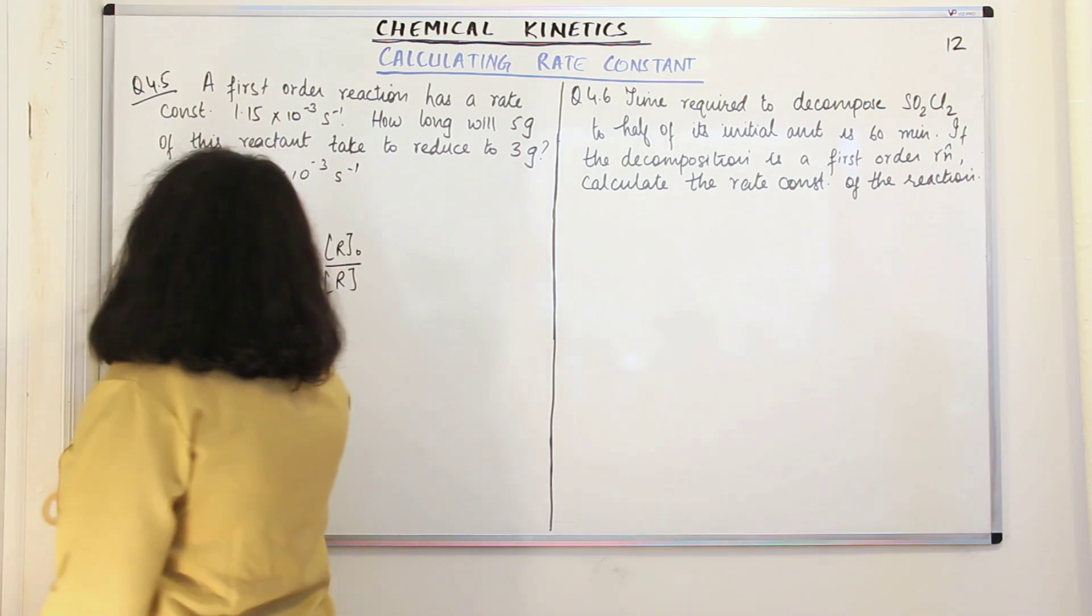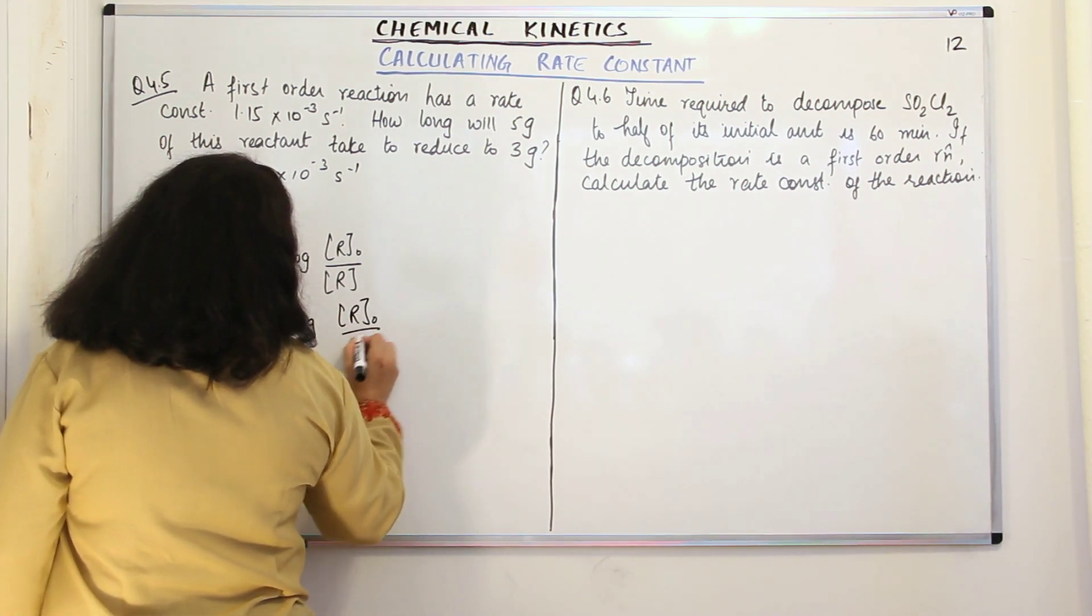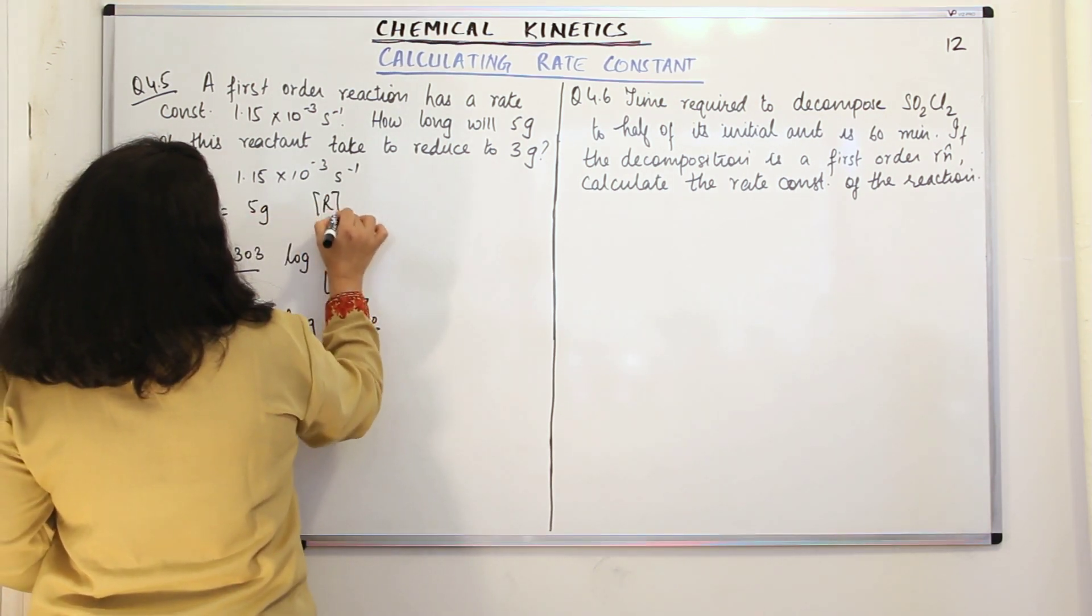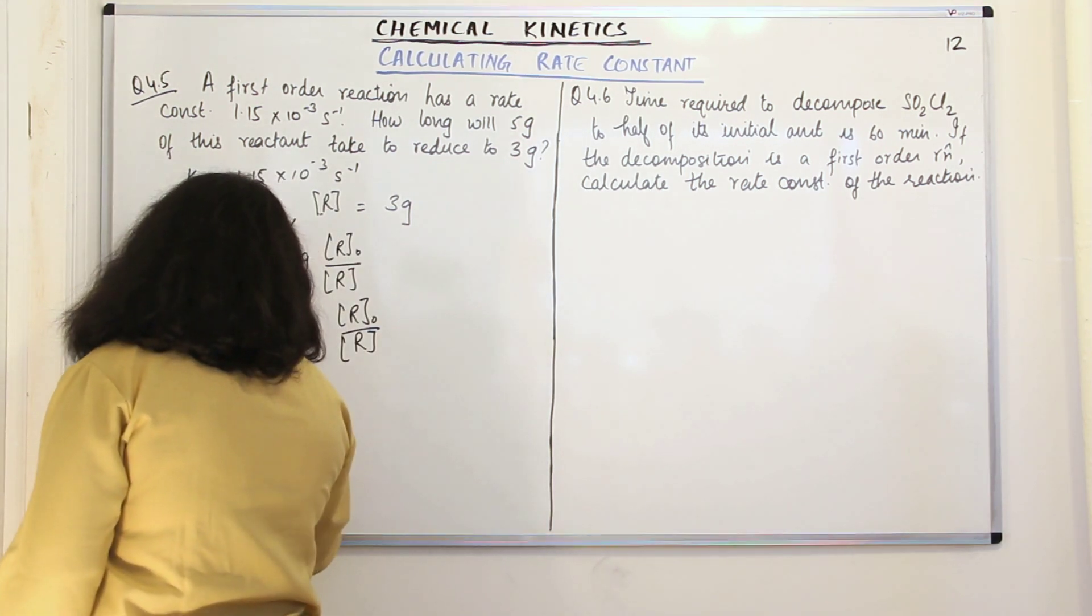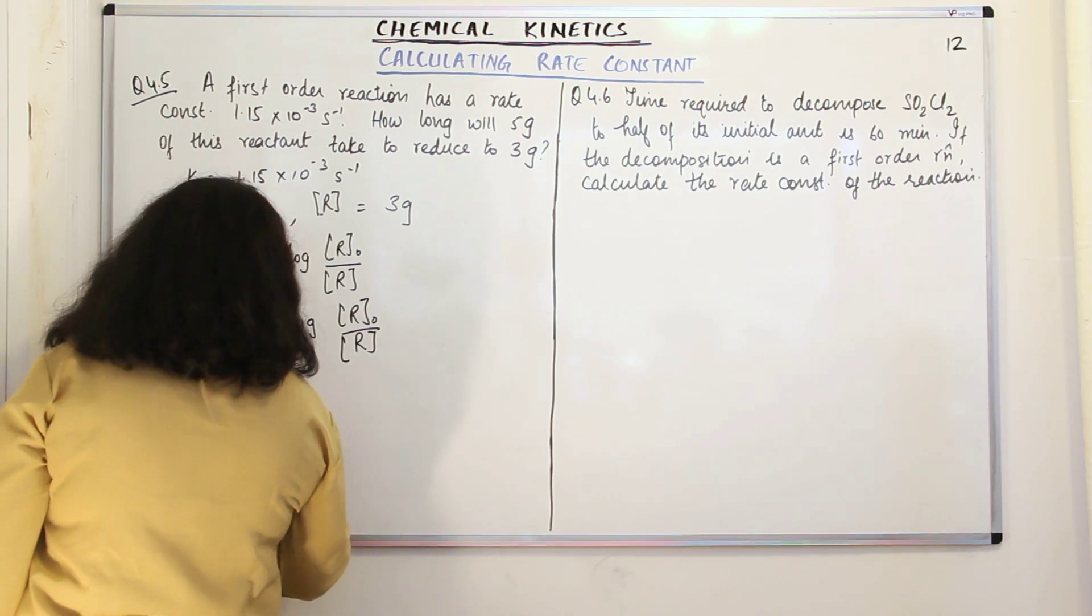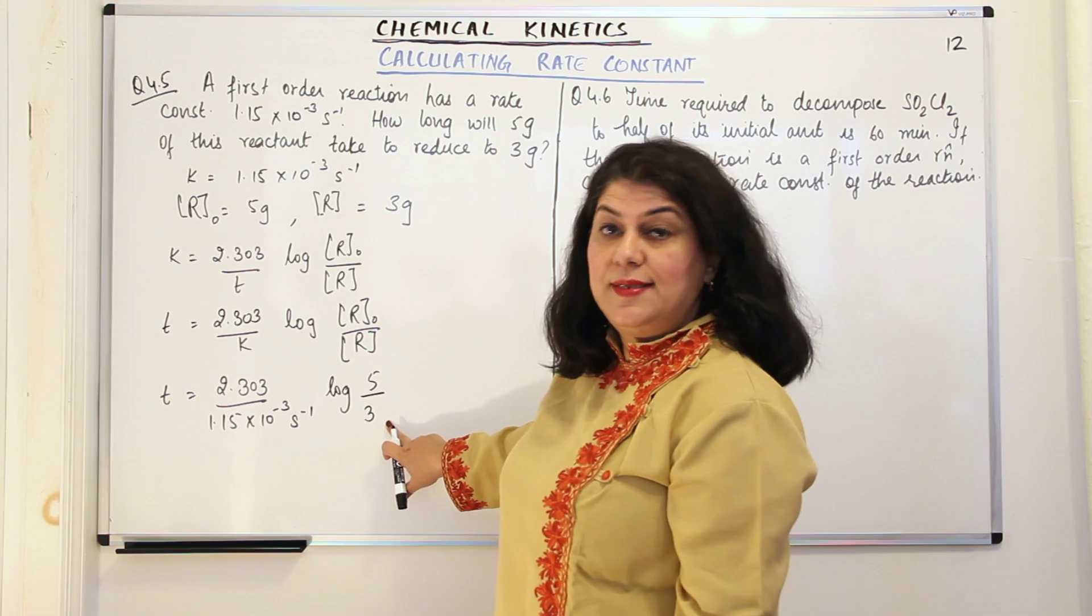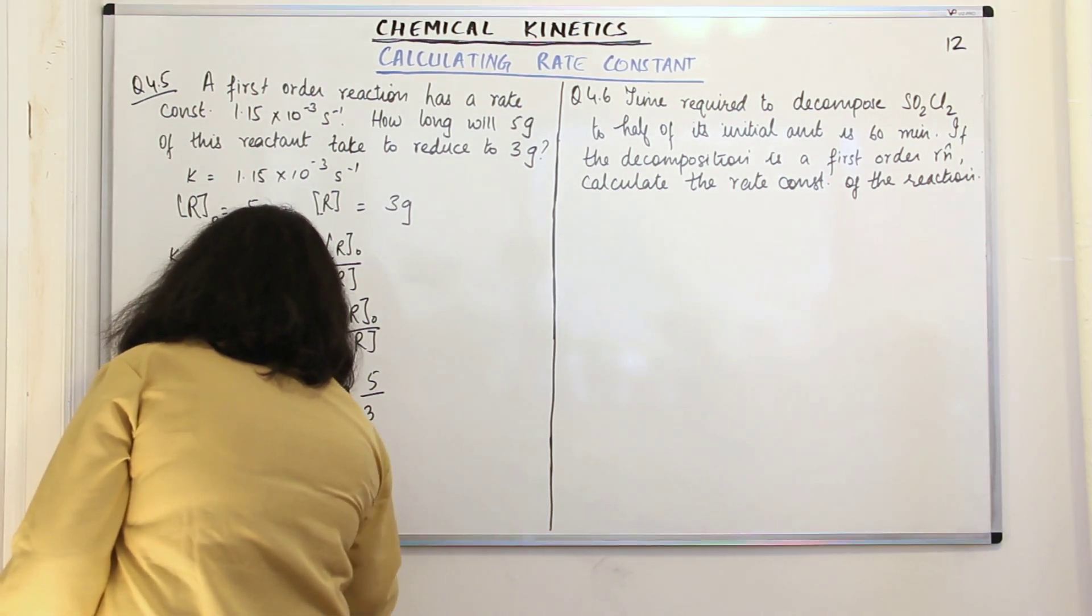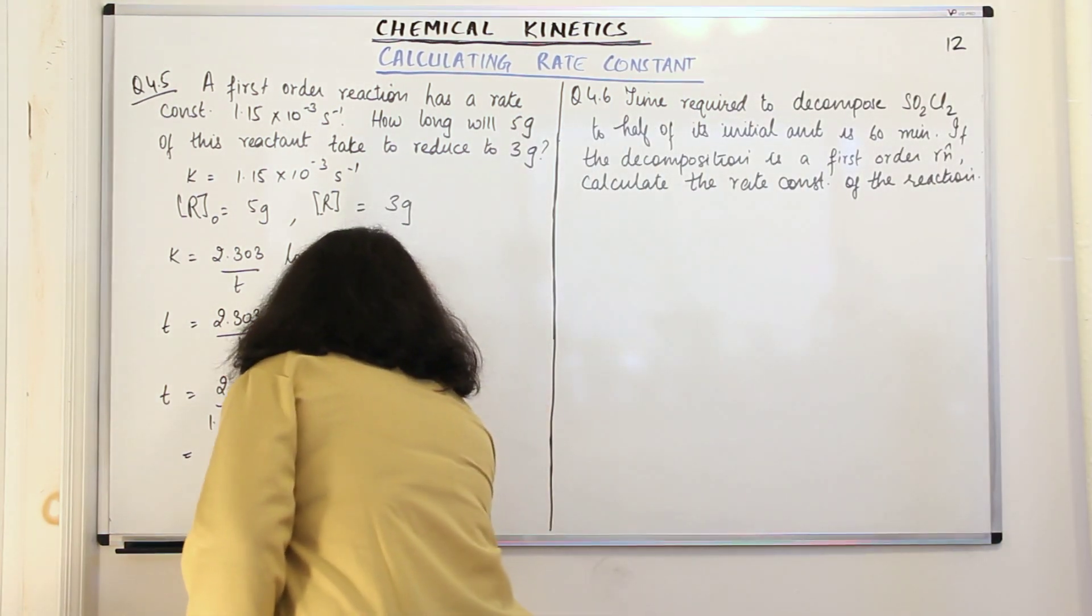Let us now find out the value of T. T is equal to 2.303 upon K log R0 upon R. We know that R0 is equal to 5 grams and R is equal to 3 grams. Let us substitute these values. T would be equal to 2.303 upon K, which is 1.15 into 10 to the power minus 3 per second, log of 5 upon 3. When you solve this, log 5 upon 3 comes out to be 0.2219.